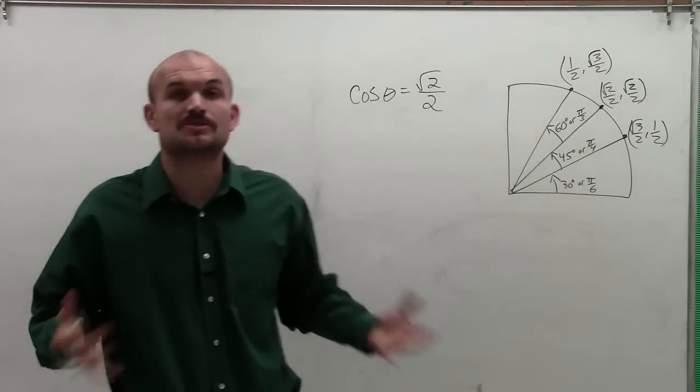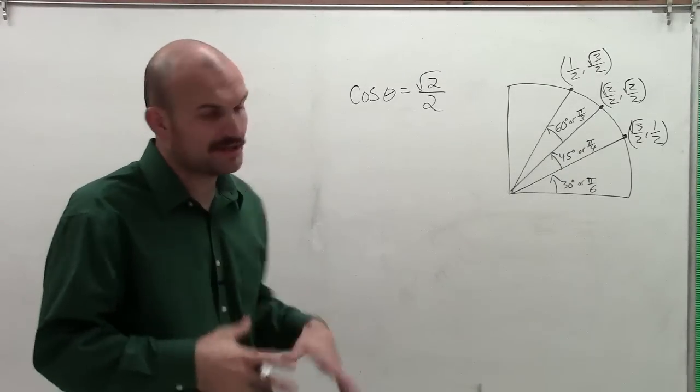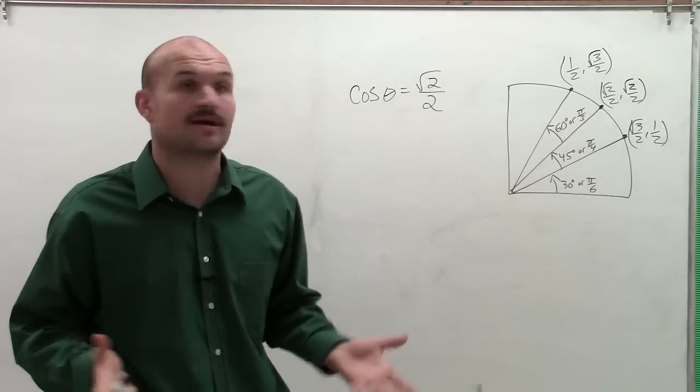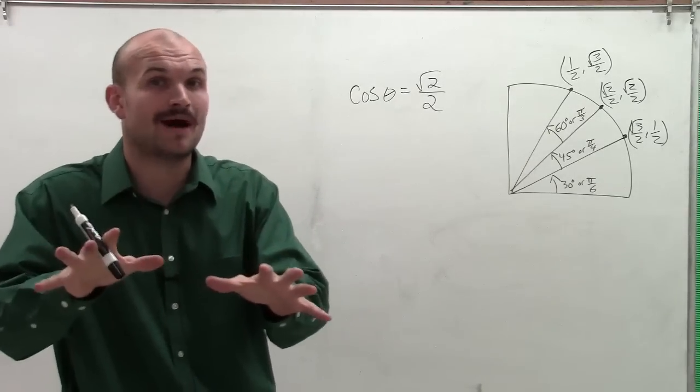So what I have is the cosine of theta equals square root of 2 divided by 2. And what we want to do is find what is the angle theta when cosine equals square root of 2 over 2 in the first quadrant.